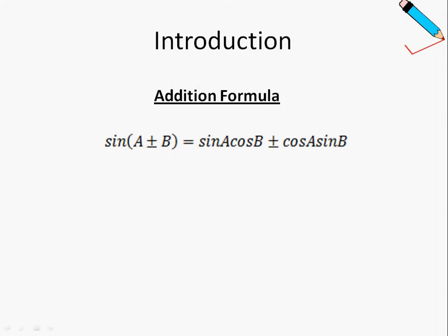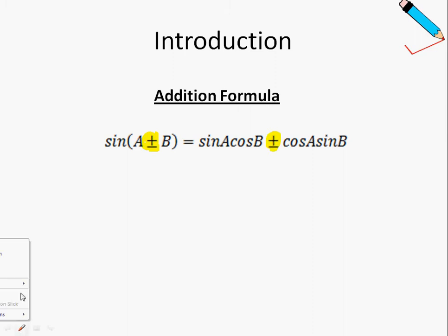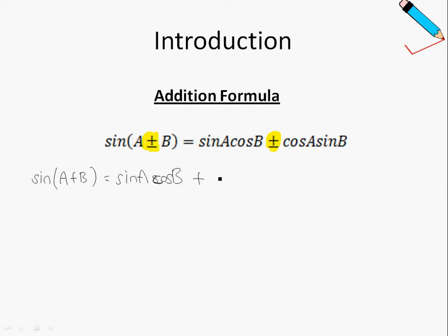There are actually three parts to the addition formula. I'll start with the sine part of the formula. Let me explain what this symbol means. The sine of A plus B is equals to the sine A multiplied by cosine B, plus cosine A times sine B.